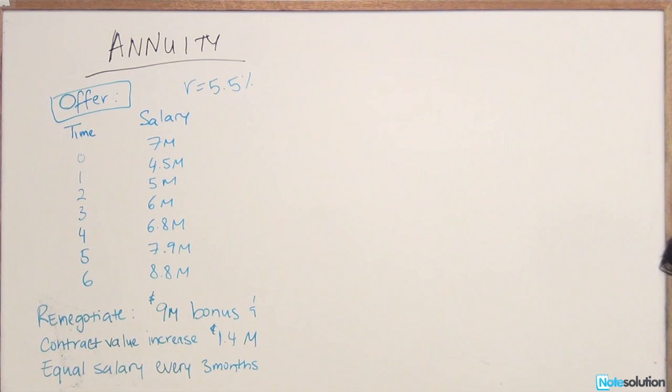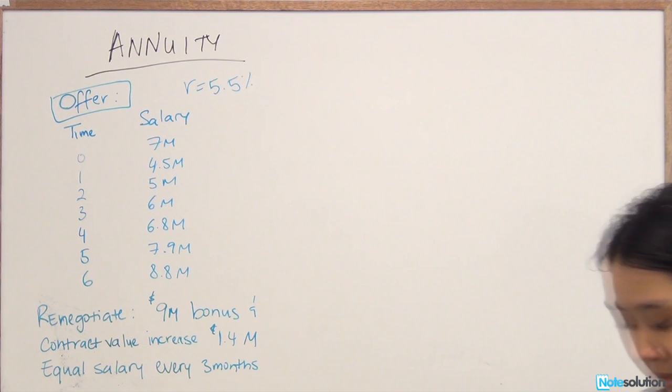We know that the interest rates are 5.5%, which is compounded daily, and we're assuming that it's 365 days in one year. So what is the amount of his quarterly paycheck is what we're really trying to find out.